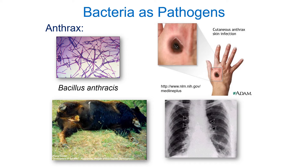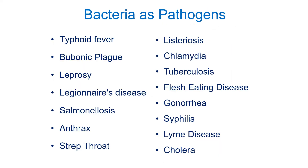Of course there are bacteria that cause harm — they act as pathogens. Anthrax, for example, can kill; it can cause respiratory infections and skin infections. Here are several other bacterial pathogens and disorders we will come back to in more detail. We'll look at them in terms of the species causing the problem, the epidemiology of how the disease spreads, and later the effects on different tissues and organ systems.